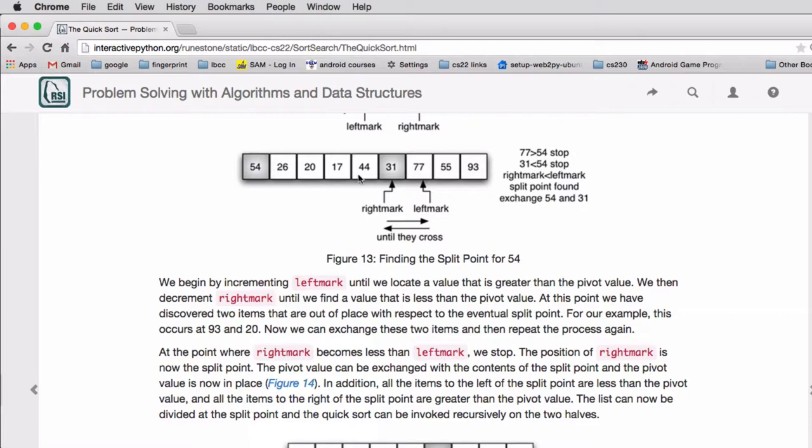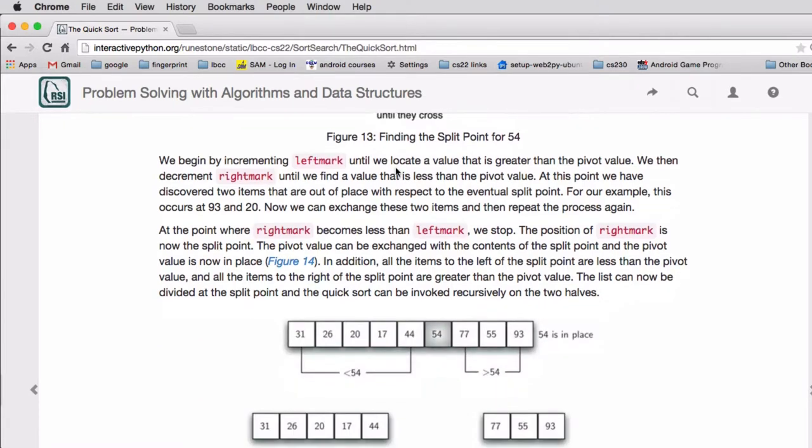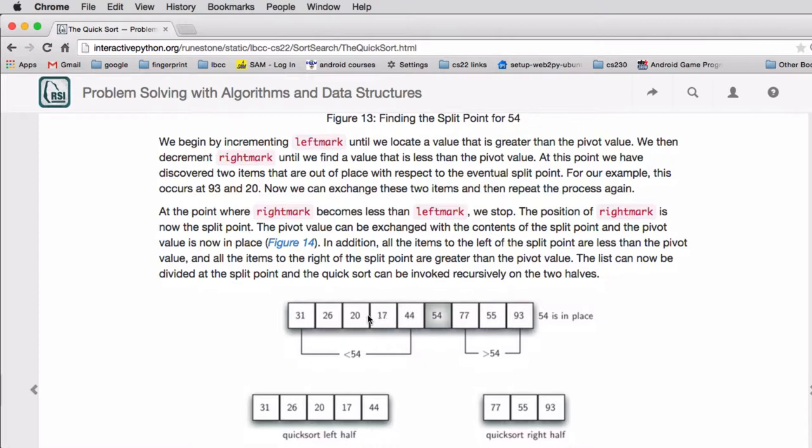So we exchange the 54 for the 31. So the 31 is in the list on the left, so we can move it to anywhere in the list on the left. It's still going to be less than 54. And now it turns out our final list looks like this. We have all these numbers less than 54, and we have all these numbers greater than 54. And the 54 happens to be in the final place in our sorted list.